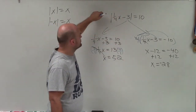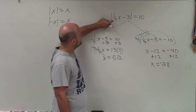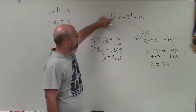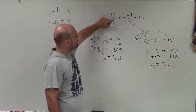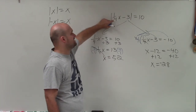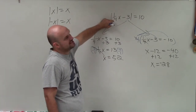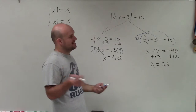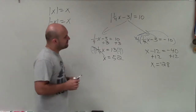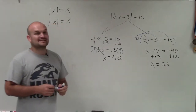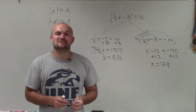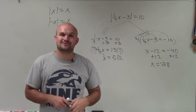Now let's try negative 28: one-fourth of negative 28 is negative 7. Negative 7 minus 3 is negative 10. The absolute value of negative 10 is 10. Both solutions work. That is how you solve an absolute value equation, ladies and gentlemen, by creating two cases.